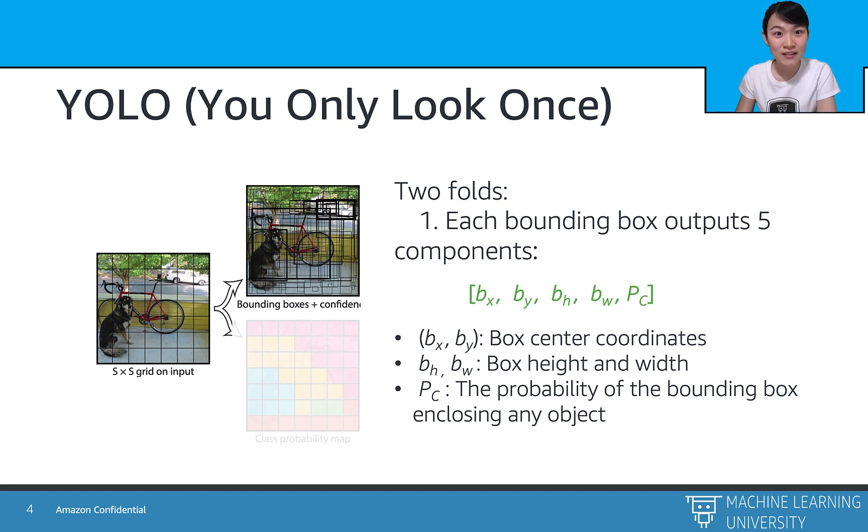YOLO outputs the four coordinates bx, by, bh, bw of the box, where bx and by are the coordinates of the center, bh and bw are the height and width of the boxes.